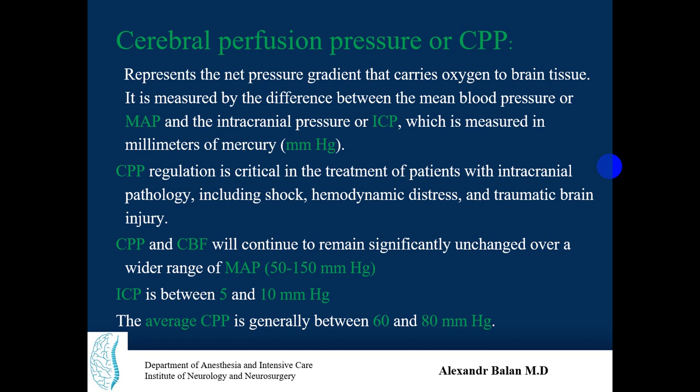Cerebral perfusion pressure (CPP) represents the net pressure gradient that carries oxygen to the brain tissue. It is measured as the difference between mean arterial pressure (MAP) and intracranial pressure (ICP) in millimeters of mercury. CPP regulation is critical in patients with intracranial pathology including shock, hemodynamic distress, and traumatic brain injury.